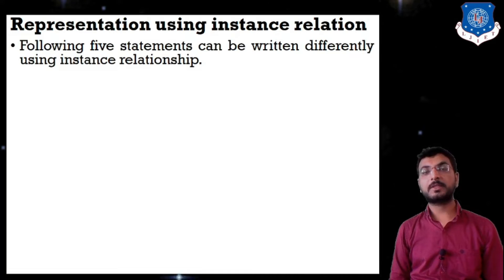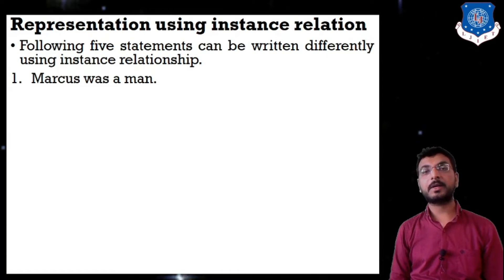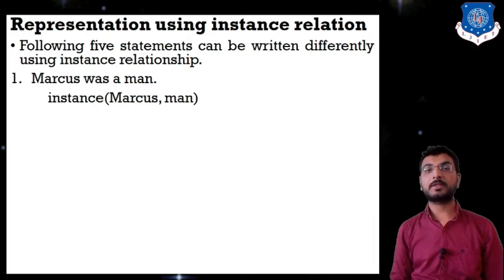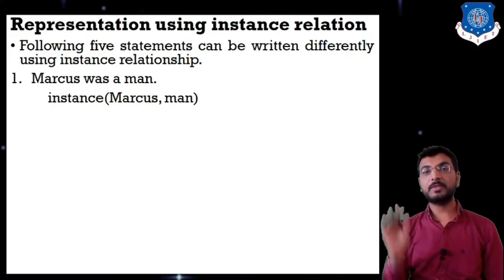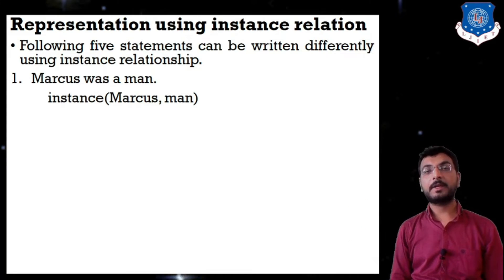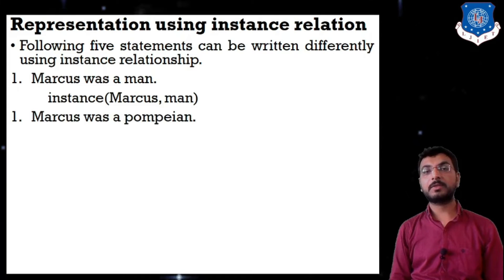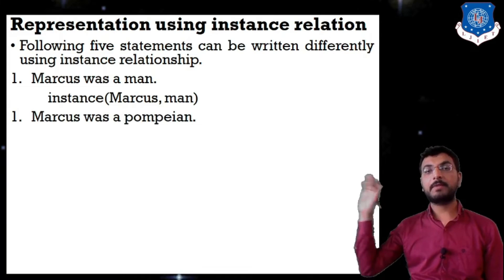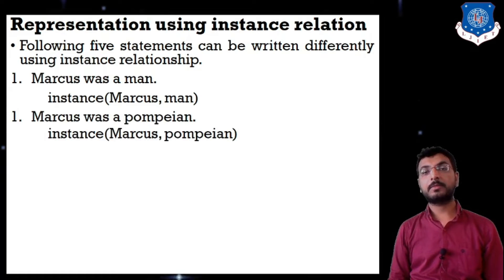The following five statements can be written using instance relationship. First: 'Marcus was a man' can be represented as instance_of(marcus, man) — Marcus is an instance of the class 'man'. Second: 'Marcus was a Pompeian' is represented as instance_of(marcus, pompeian) — Marcus is an instance of the class Pompeian.